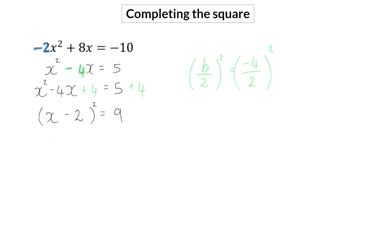To finally solve x, we can take the square root on both sides of the equation, and here you need to remember the plus minus on the right-hand side, which is why x minus 3 can then be equal to 3, or it can be equal to minus 3. This means that x is either 5 or x is minus 1.